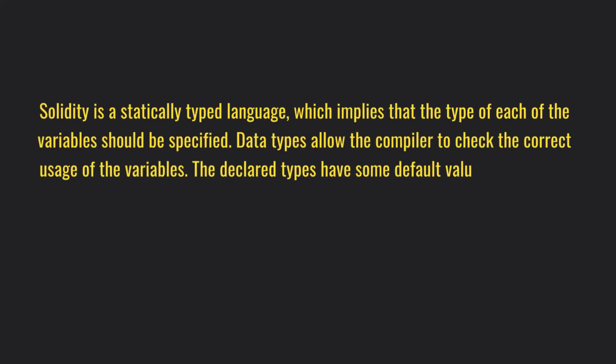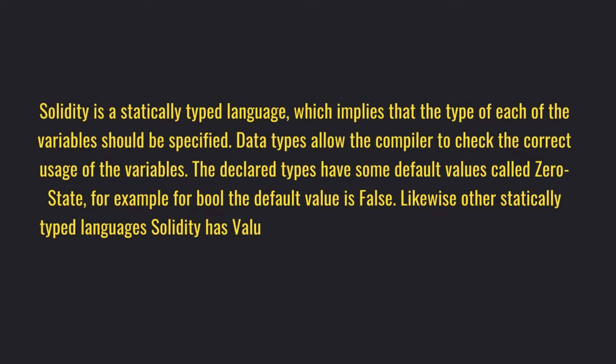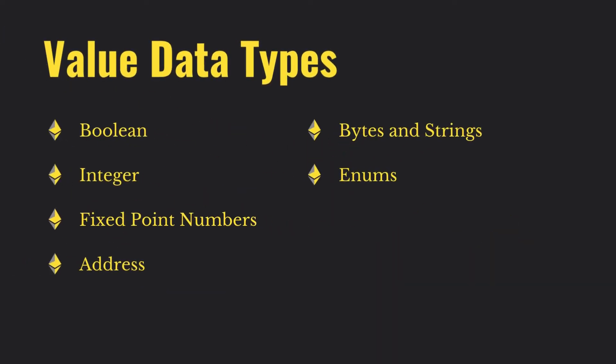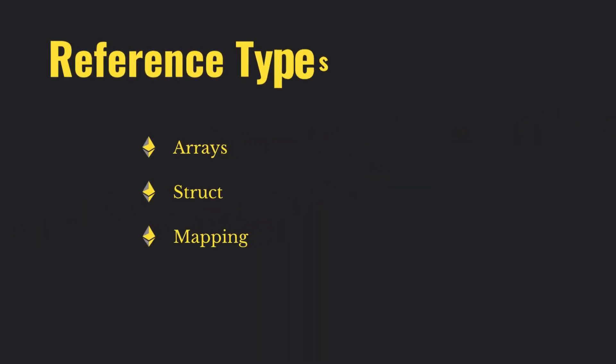Like every programming language has its native data type, in the same way Solidity has its data types. There are generally two types of data types in Solidity. One is value data type — in that you will have boolean, integer, fixed point number, address, byte, string, and enum. The other data type is called reference data type, and in that we have array, struct, and mapping.